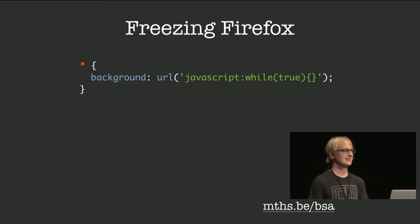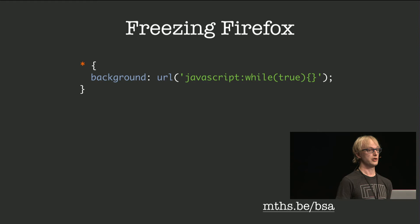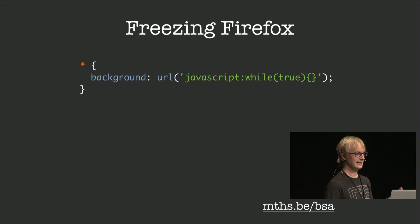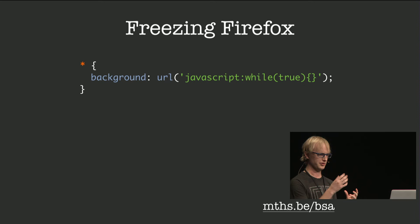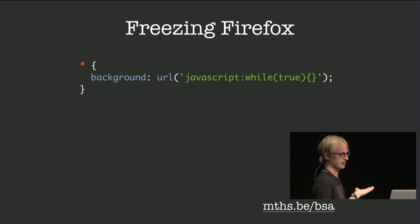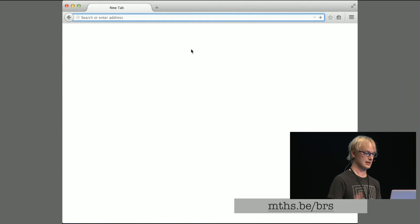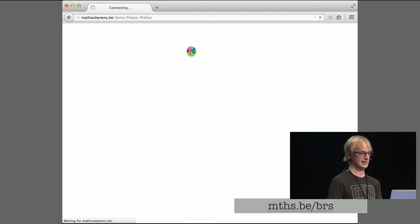It's not just IE — you can kind of execute JavaScript using nothing but CSS in Firefox too. If you assign a background image to an element and point it to a JavaScript URL, that script is executed but in a sandbox, so you can't steal DOM data or do anything really useful. But you could trigger an infinite loop, and if you open the page in Firefox it crashes — there's nothing you can do other than force quit and start over. Not a good experience for your users.